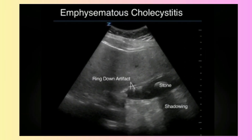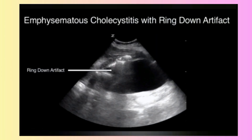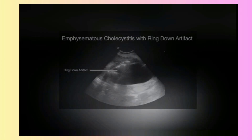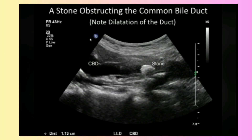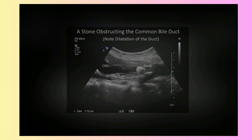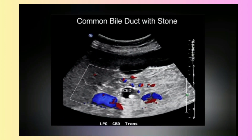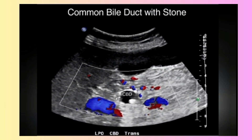Emphysematous cholecystitis. Emphysematous cholecystitis with wrinkle-down artifact. A stone obstructing the common bile duct. Common bile duct with stones.